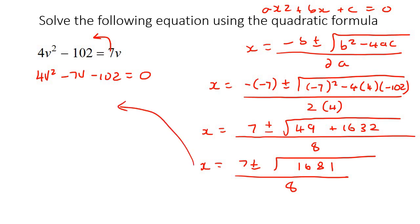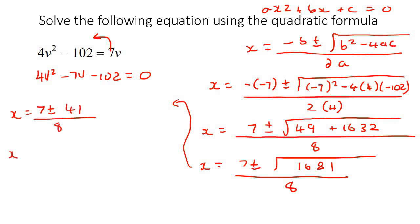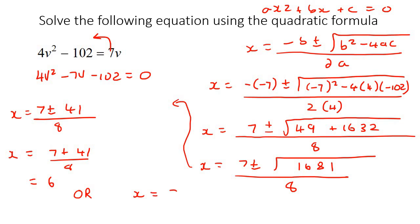So now we have 7 plus minus 1681 over 8. The square root of 1681 is 41 — that's on my calculator, not me. So we get two answers. The first answer: 7 plus 41 over 8, which would be 6. And then for your second answer, we use a negative, so you would say 7 take away 41 over 8, and that would be negative 17 over 4. If you want to write that in decimal form, it's negative 4.25.